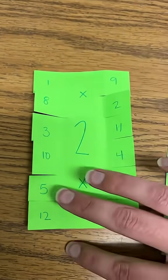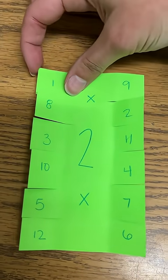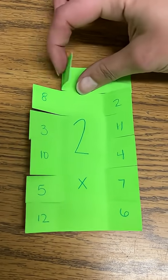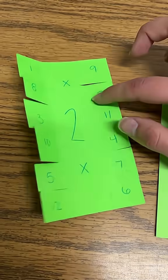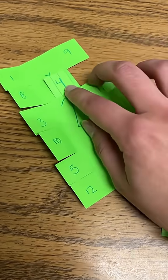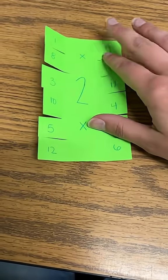Then after they finish this part they're going to write in the answer. So they're going to do one times two, flip this over, and then write the correct answer. They are going to keep doing that until they finish the whole entire notecard.